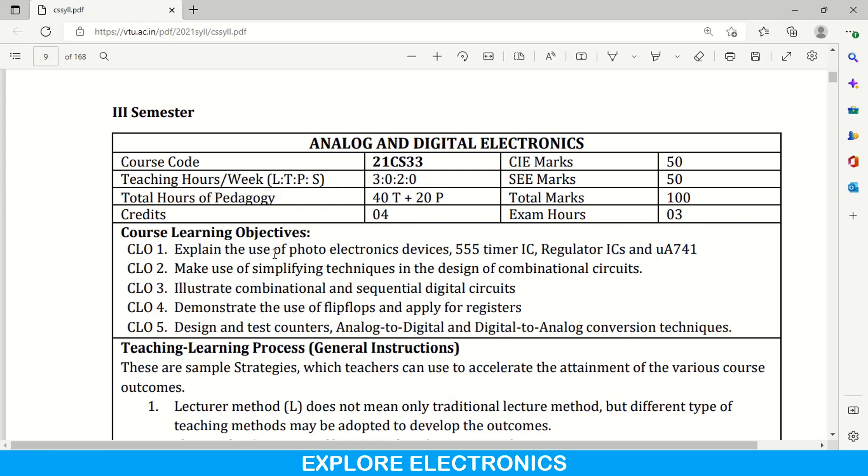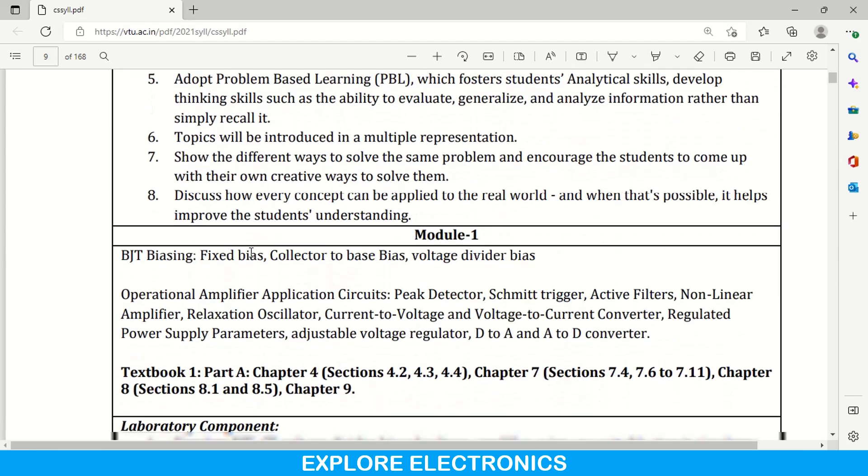These are the course learning objectives. In this subject you are going to learn about photoelectronic devices, 555 timer IC and regulator IC, mu A741 that is operational amplifier IC, and other techniques related to design of combinational circuits. Simplification of combinational circuits using K-map and Quine-McCluskey method, and illustrate combinational and sequential digital circuits. Then demonstrate the use of flip-flops and apply for registers and design and test counters, analog to digital and digital to analog conversion techniques. So this is what the main agenda of this subject.